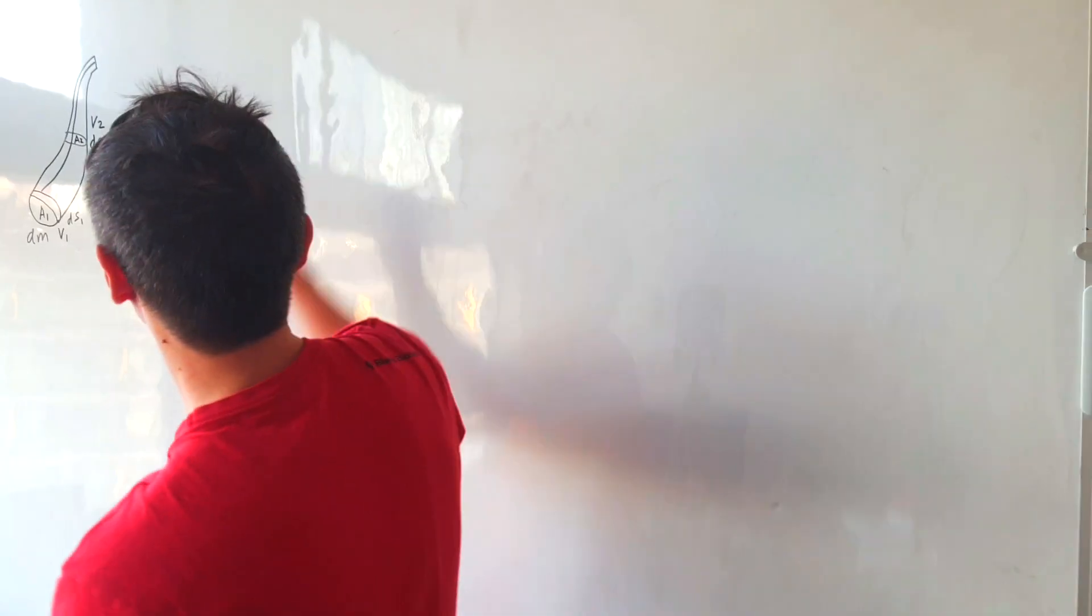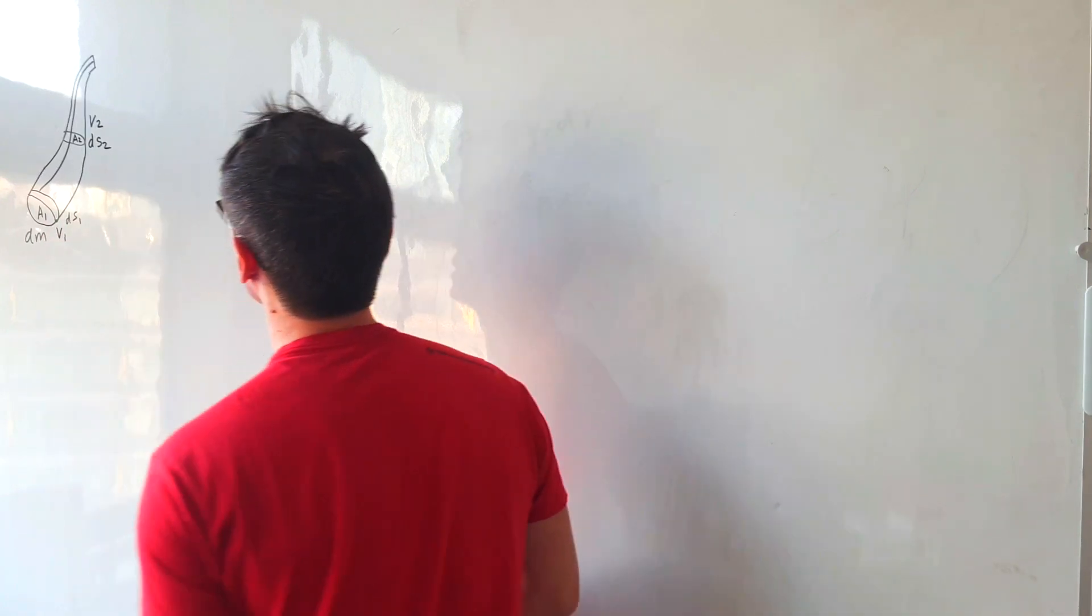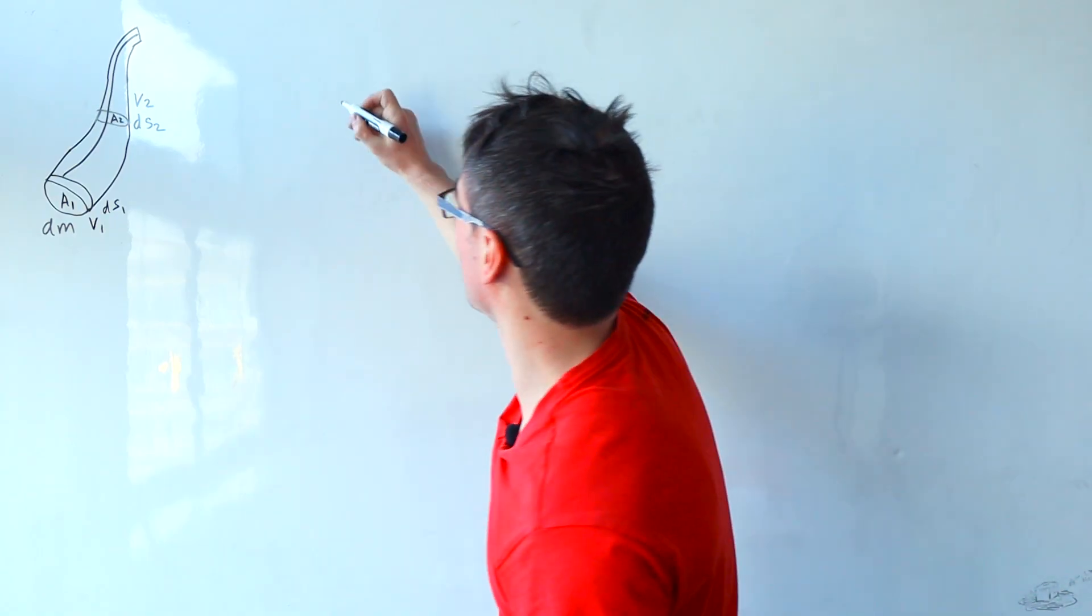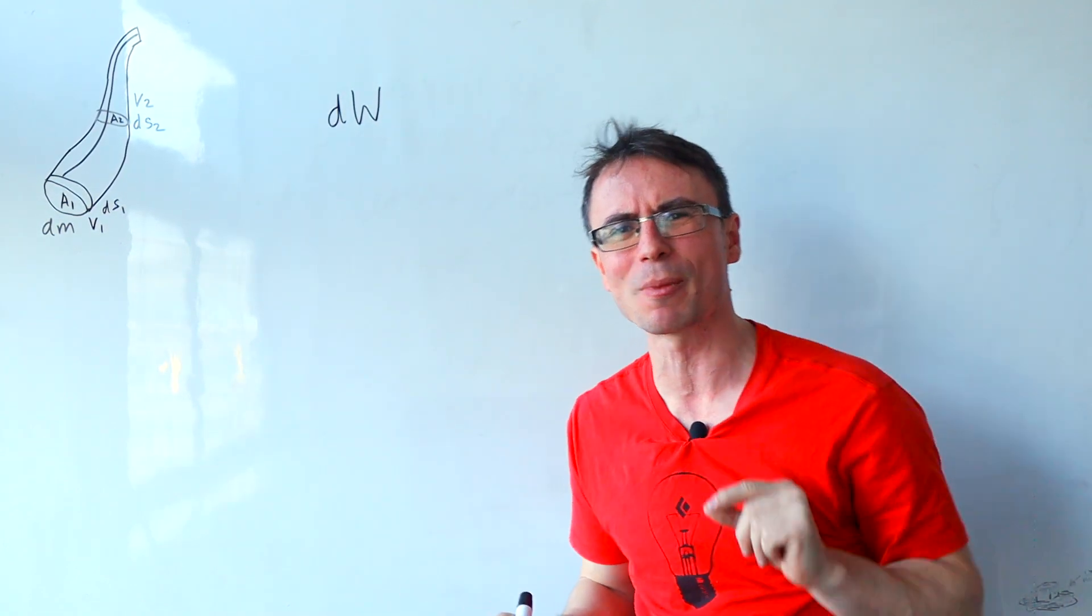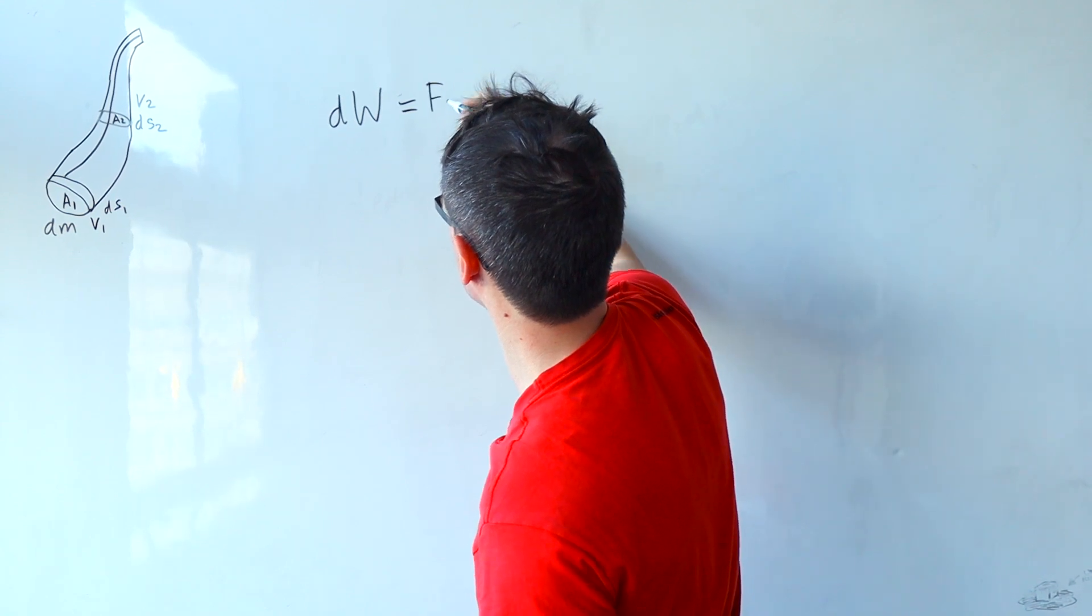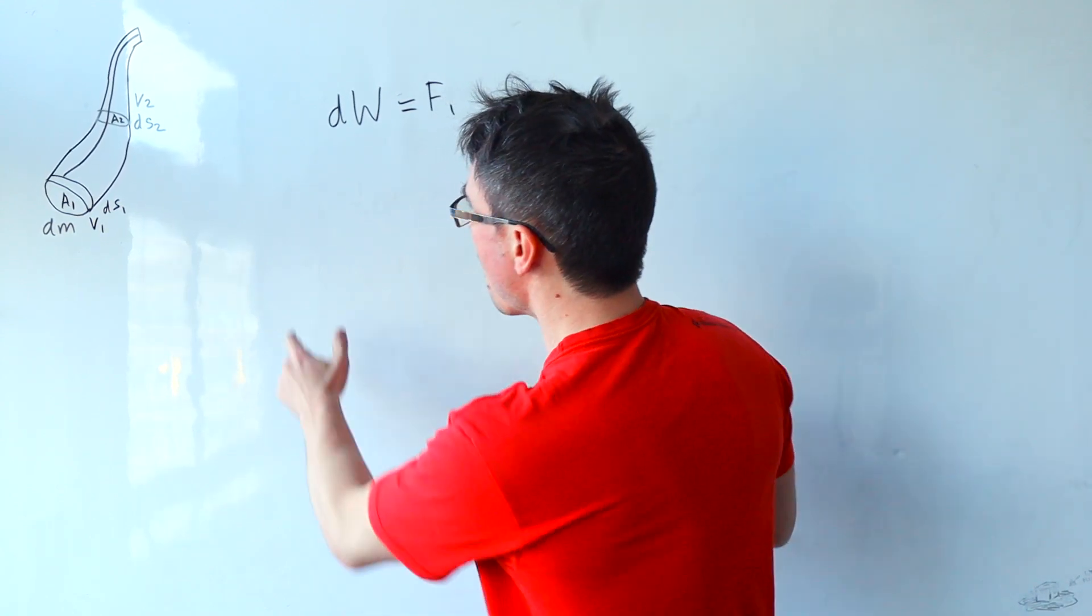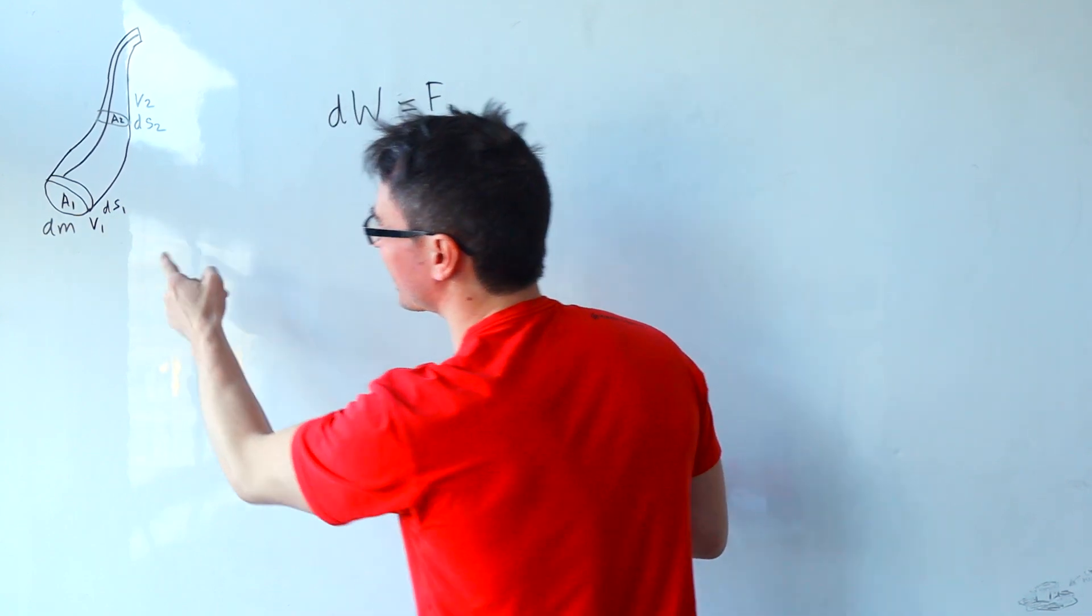In order to do so we're going to start off with the amount of work that's being done for a particle to go from here to here. Let's call that dw for an infinitesimal amount of work on a small particle. Well this will be equal to the difference in forces multiplied by the actual distances that they travel.